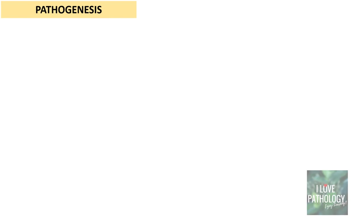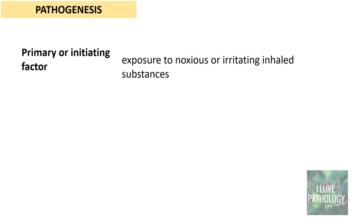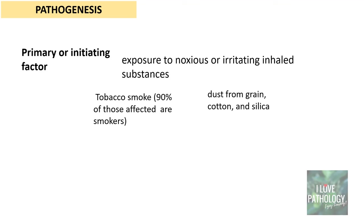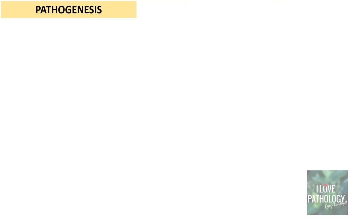The primary or initiating factor for chronic bronchitis is exposure to noxious or irritating inhaled substances, particularly tobacco smoke — 90% of those affected are smokers. The remaining 10% are basically from exposure to dust from grain, cotton, or silica.